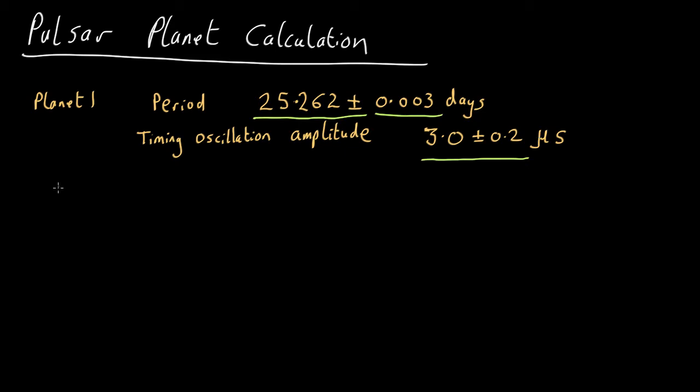So, we know that the radius of the orbit of the planet around the pulsar is given by the cube root of the gravitational constant, the mass of the pulsar, the period squared all over four pi squared.